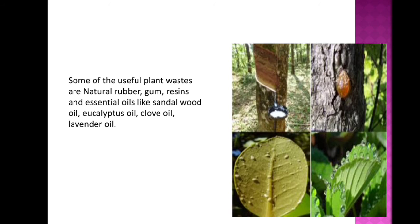As you can see in the picture, there are some useful plant waste products. These include natural rubber, gum resins, and essential oils such as sandalwood oil, eucalyptus oil, clove oil, and lavender oil. These are all various useful plant waste products.